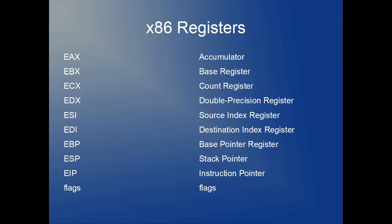Here is a table that summarizes the registers available to us. We have the EAX register, which is used as an accumulator; the EBX register, which is a base register; and the ECX register, which serves as a counter.